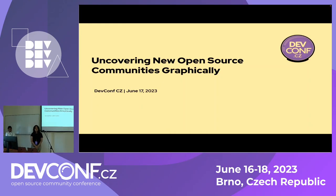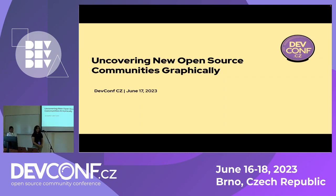All right. Hey, everyone. Thanks for joining us. My name is Oindrila Chatterjee, and I'm a senior data scientist at Red Hat. I work in the emerging technologies group at Red Hat, and I am coming from Boston, United States. Today we are going to be talking about uncovering new open source communities using graphical analysis and network analysis, and I'll let my colleague introduce herself.